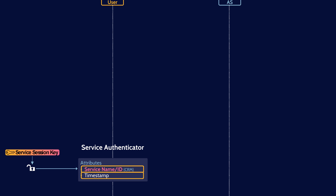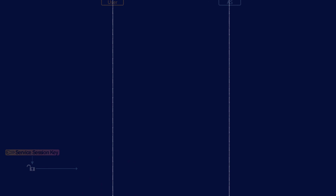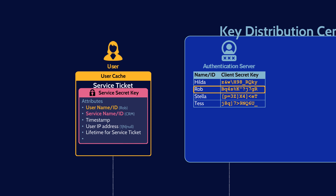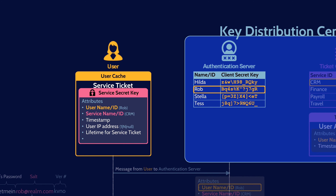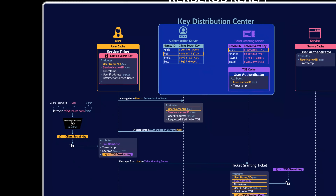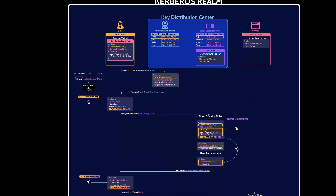The user also looks at the timestamp to make sure that the authenticator was created within the last couple of minutes. And just like the TGS and the service, the user also maintains its own cache. Since the user has mutually authenticated the service, it will cache a copy of the encrypted service ticket for future use. And there you have a walkthrough of how a flurry of messages are sent by the Kerberos protocol to securely authenticate a user to a service over an insecure network.